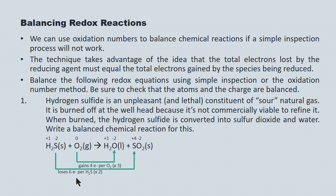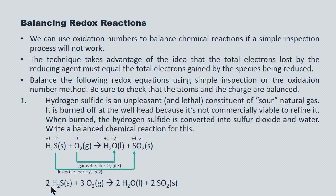We use those multipliers as the coefficients in the reactants. Three becomes the coefficient of the oxygen, and two becomes the coefficient for the hydrogen sulfide. Now I have two sulfur atoms going in, so I add a two in front of sulfur dioxide on the product side. I've got four hydrogens going in, so I add a two in front of water to ensure four hydrogens come out. There are six oxygen atoms going in and six oxygen atoms coming out, so the overall equation is balanced.